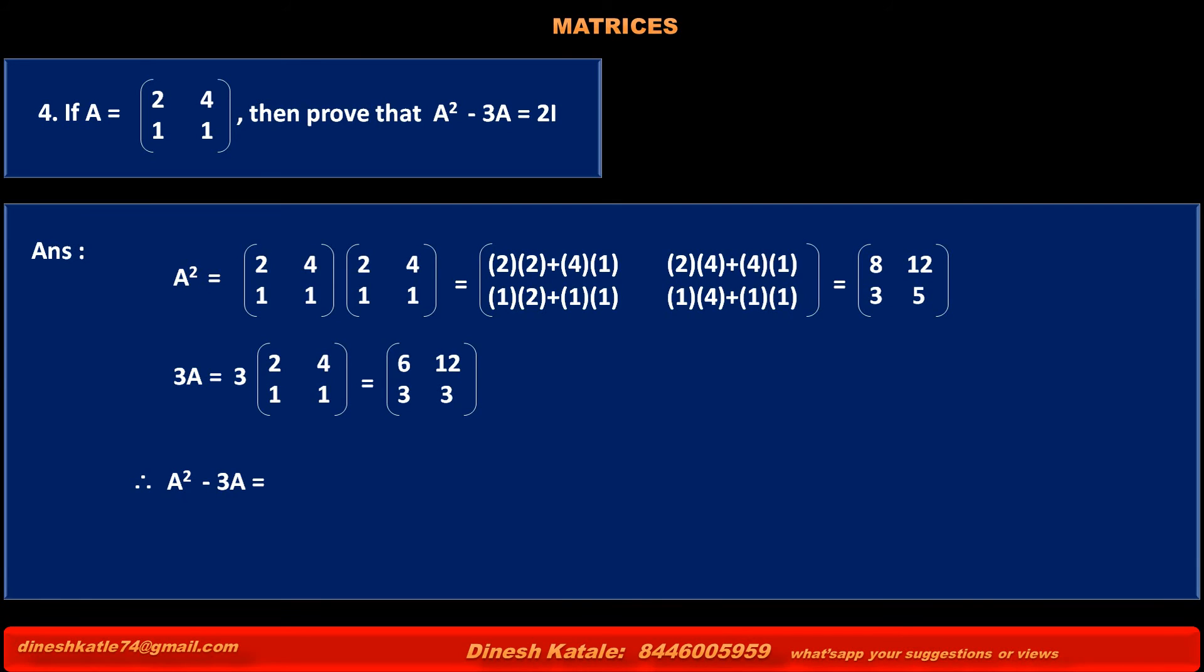Therefore, left-hand side A² - 3A is equal to the value of A², which is [8, 12; 3, 5], minus the value of 3A, that is [6, 12; 3, 3].